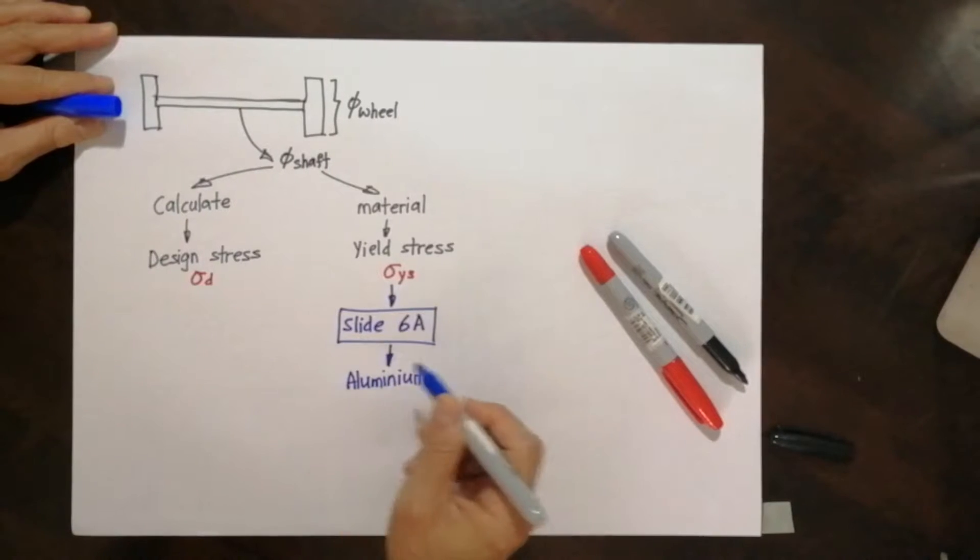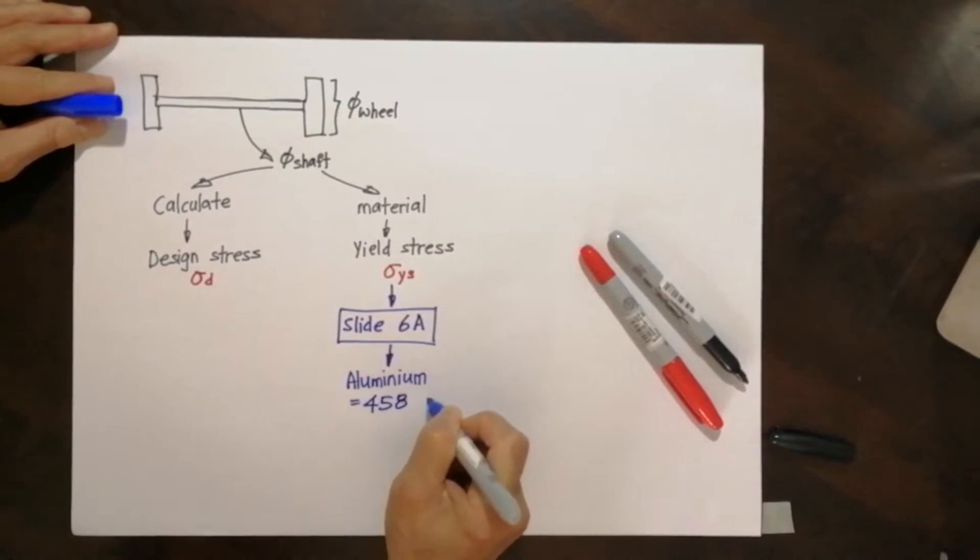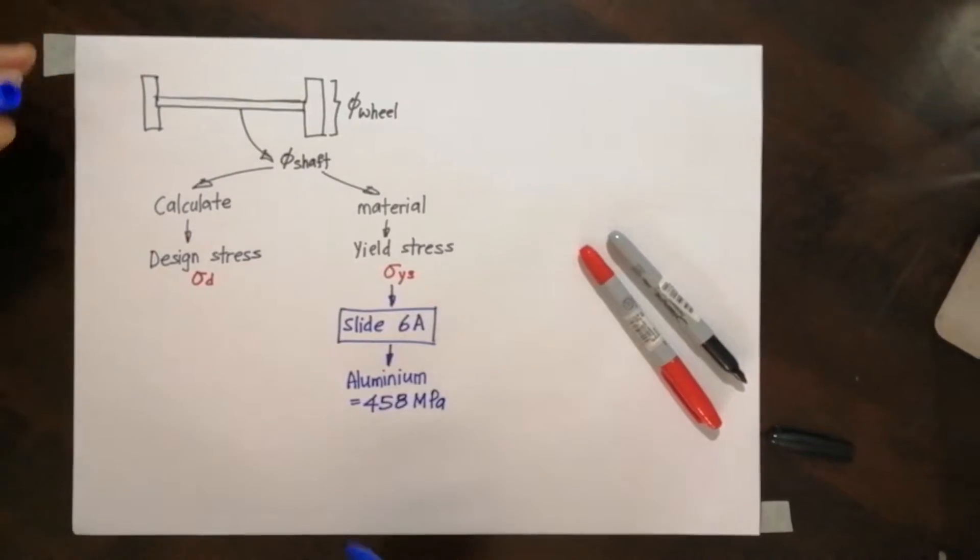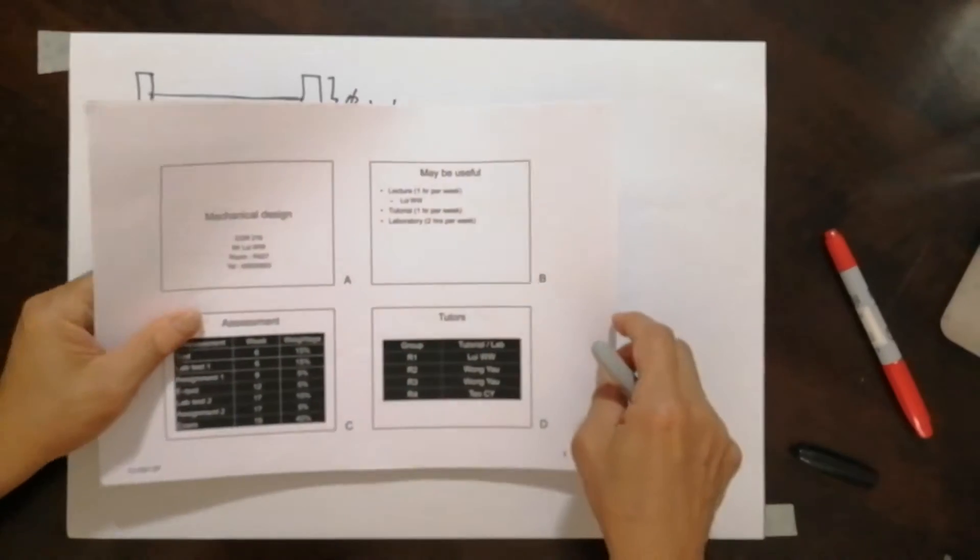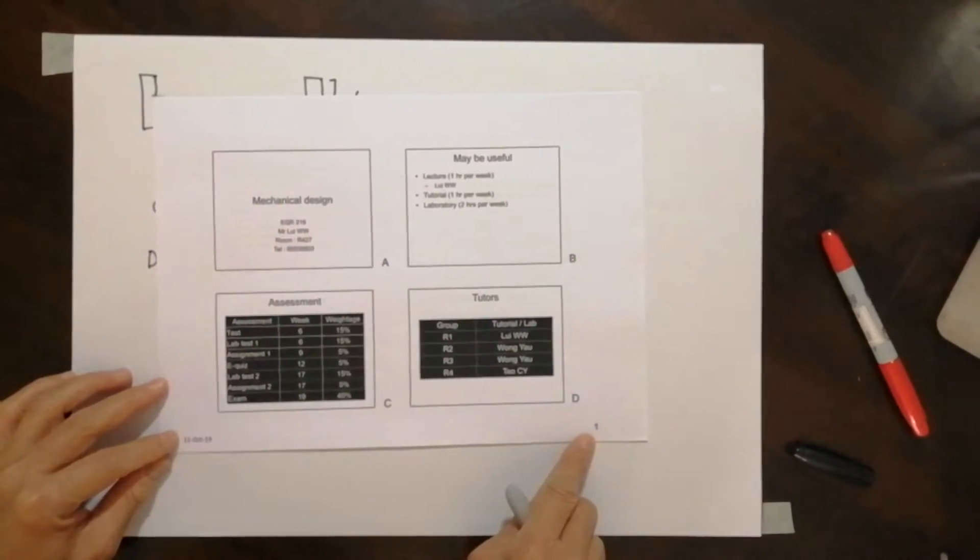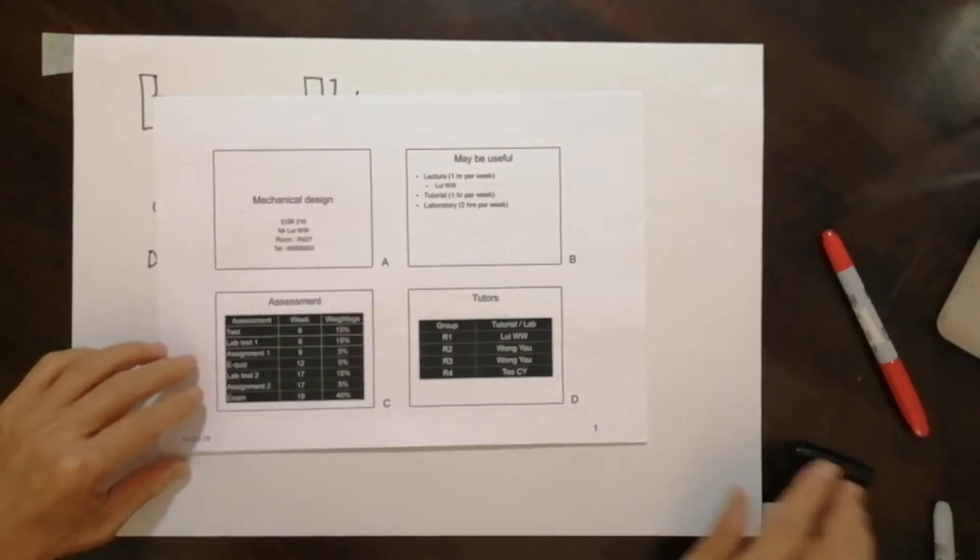And aluminum, you realize that you have a yield stress of 458 megapascals. Let me see whether I can show you where this data comes from. In your slides you will have this page, and you go to page 6A.